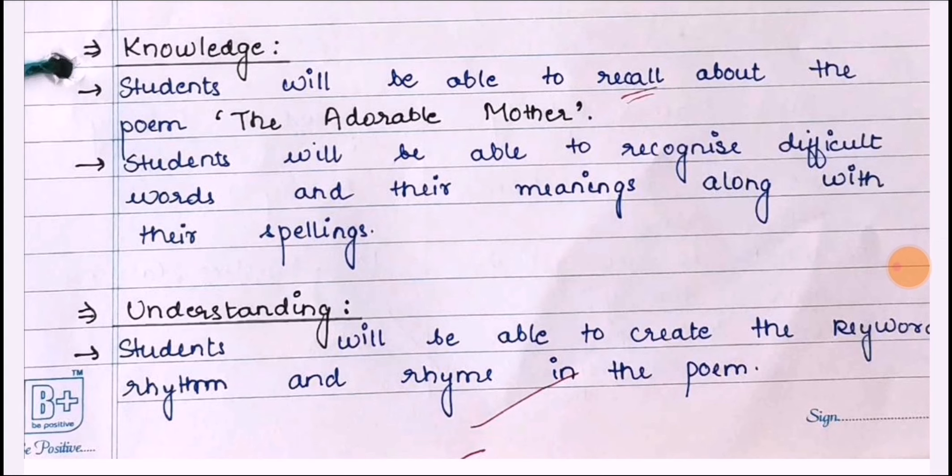Under knowledge, students will be able to recall about the poem 'The Adorable Mother.' Second, students will be able to recognize difficult words and their meanings along with their spelling, in the form of specific objectives.